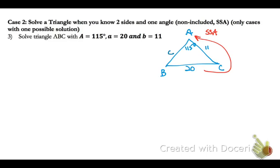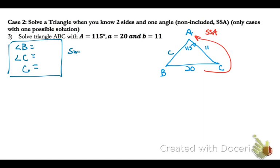Label side C, and we need to find angle B, angle C, and side C. Since we know side B, let's start by solving for angle B. We'll use the form of the formula with the angle measure on top: the sine of B over 11 equals the sine of 115 over 20. Multiply both sides by 11. Take the sine of 115, divide by 20, press enter, then multiply by 11.